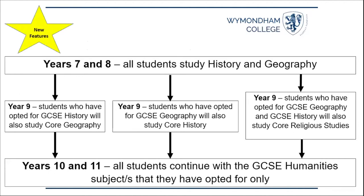In Years 7 and 8, all students study Geography and History on an equal basis. In Year 9, they will follow one of three possible pathways. First, if they have opted for GCSE History, they will also study Core Geography in Year 9 only. Secondly, if they have opted for GCSE Geography, they will also study Core History. And thirdly, if they have opted for both GCSE History and GCSE Geography, they will also study Core Religious Studies. These core elements are designed to keep our Year 9 curriculum as broad as possible before students specialise in the GCSE Humanities subjects they have chosen in Years 10 and 11.